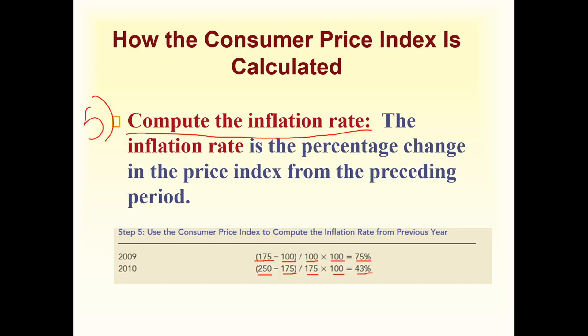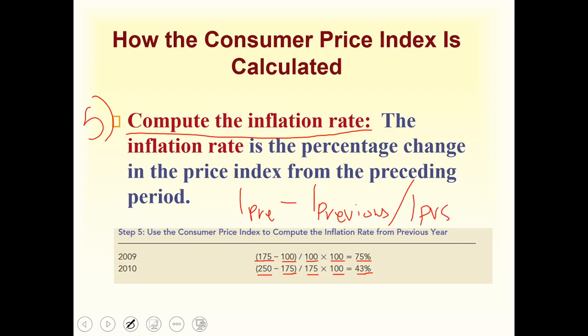The important thing to understand is that the inflation rates of 75% and 43% are only for the two products chosen in this example — hot dogs and hamburgers. To recap, the formula to calculate inflation is: index value of the present year minus index value of the previous year, divided by index value of the previous year, multiplied by 100.